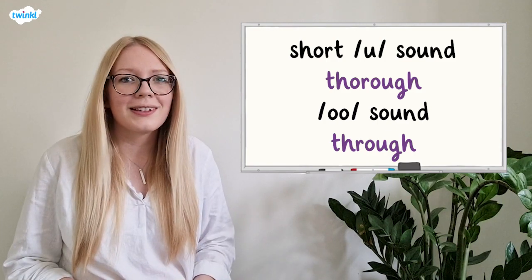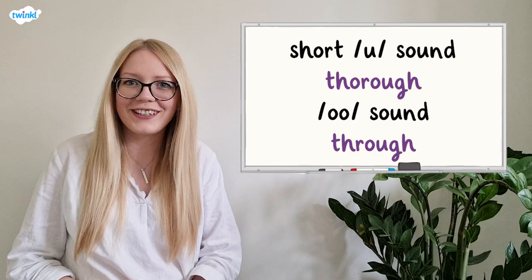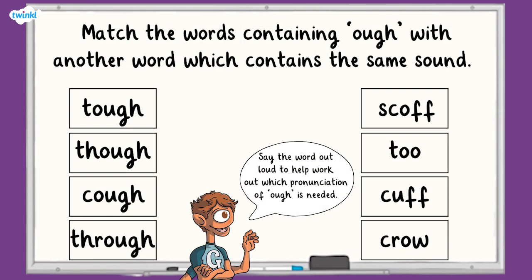Now that we've seen some examples, let's take a look at the first question. All of these words contain O-U-G-H, but there are a number of different ways to pronounce these letters. Match the words containing O-U-G-H with another word which contains the same sound. It may help you to read the words aloud as you're answering the question. Pause your video now and hit play again when you're ready.